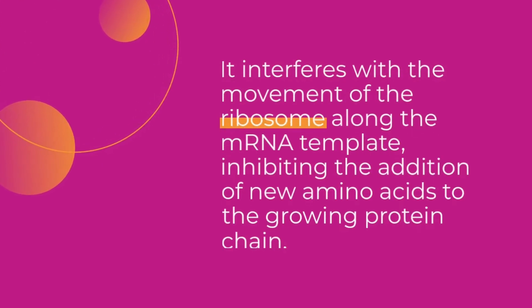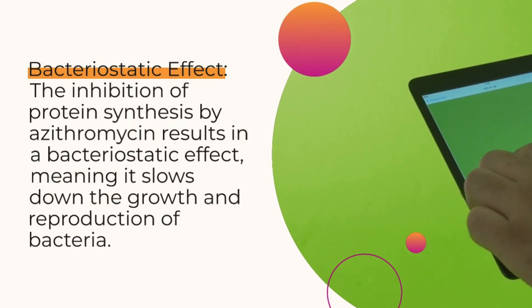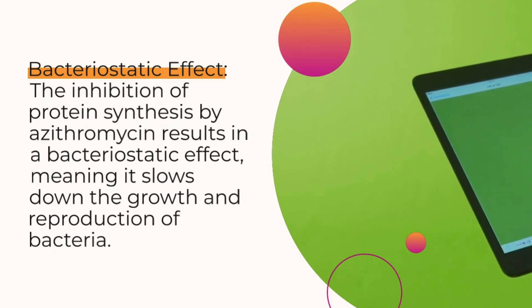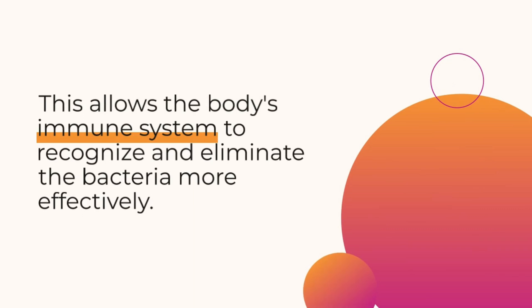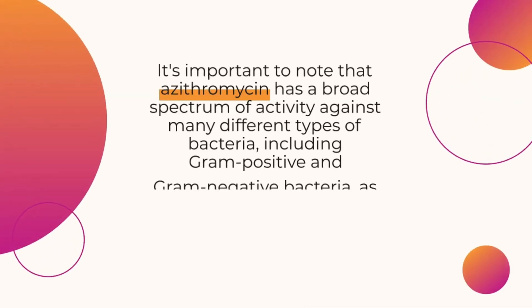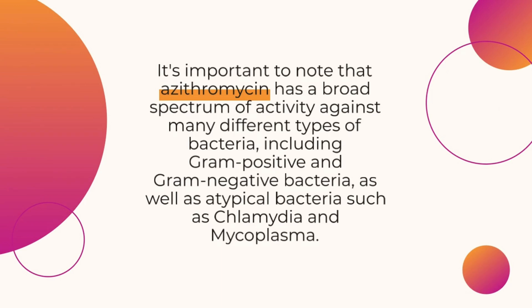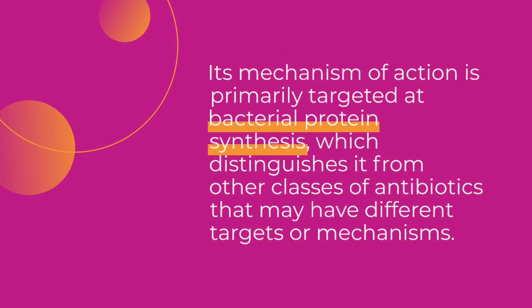By binding to the ribosome, azithromycin prevents the translocation step of protein synthesis. It interferes with the movement of the ribosome along the mRNA template, inhibiting the addition of new amino acids to the growing protein chain. This results in a bacteriostatic effect, slowing the growth and reproduction of bacteria, allowing the body's immune system to eliminate them more effectively. Azithromycin has a broad spectrum of activity against gram-positive, gram-negative, and atypical bacteria such as chlamydia and mycoplasma.